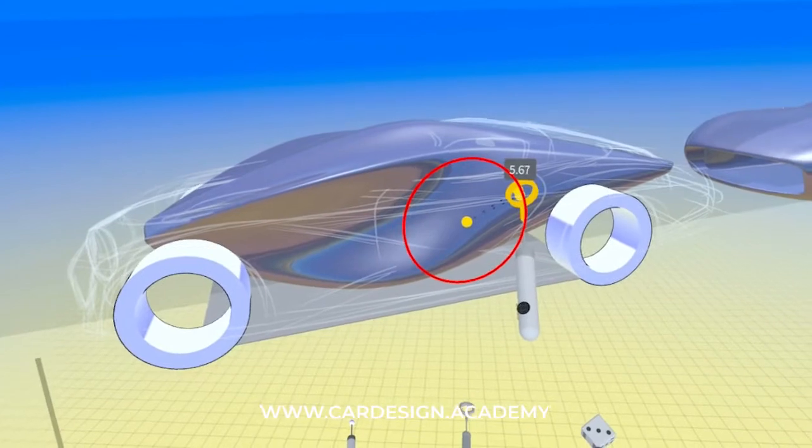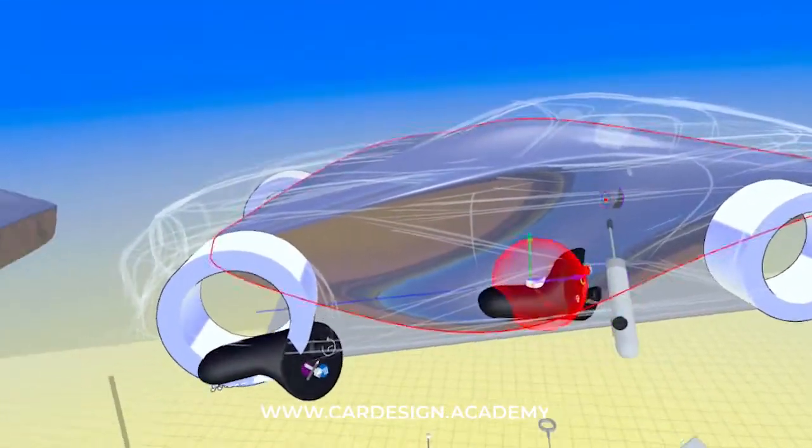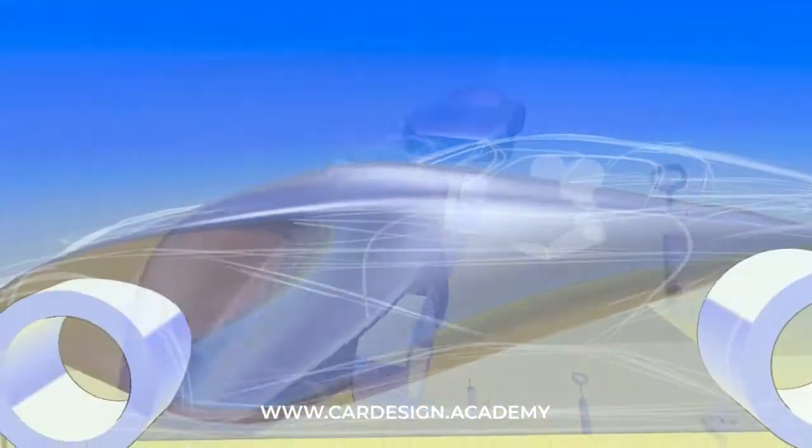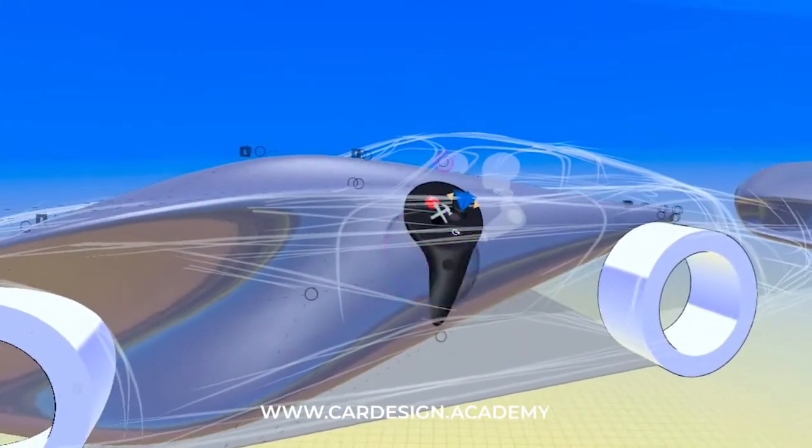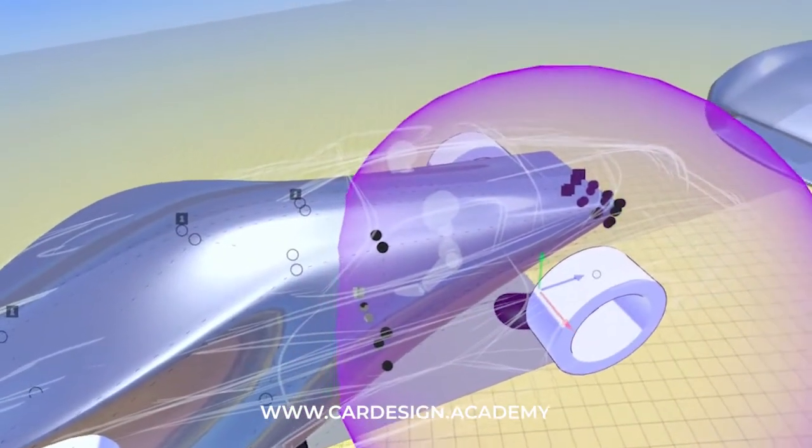I'm going to give it a little bit of a rotation just to get the gesture right. Get it positioned. I think I'm going to align it more at the front. So now I'm going to turn on my control points and I'm just going to start stretching, pulling and see what happens.